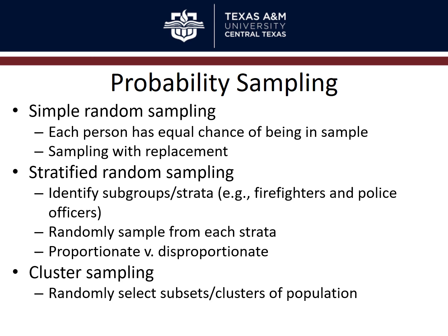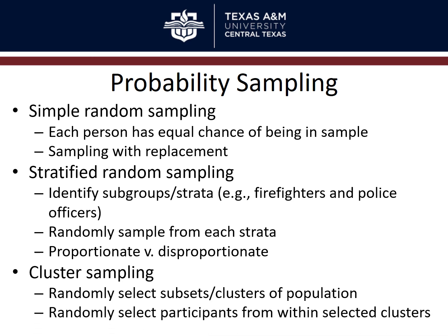Cluster sampling involves randomly selecting subsets — clusters — of a population and then randomly selecting participants within those clusters. For example, if your population is all U.S. adults, you might divide the country into four quadrants, randomly select one quadrant, then randomly select three states within it, then three counties per state, and finally randomly select participants from those nine counties. Done randomly, this reduces sampling bias while making large-scale sampling more practical.